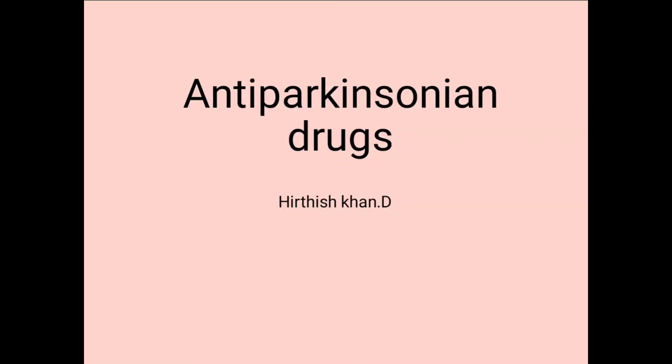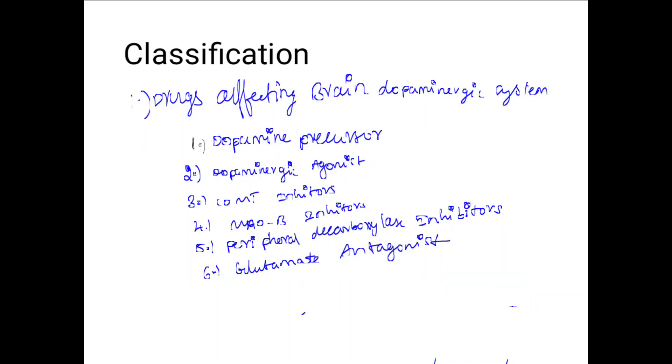Anti-Parkinsonism drugs are classified based on drugs acting on the brain dopamine system. There are six categories: dopamine precursors, dopaminergic agonists, COMT inhibitors, MAOB inhibitors, peripheral decarboxylase inhibitors, and glutamate antagonists.